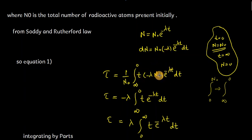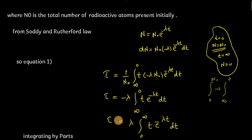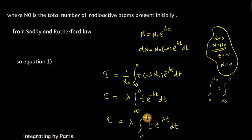After simplifying, and by changing the limit of this integration, we get a minus sign, and multiplying that minus with the existing minus sign, we obtain: tau equals λ times the integral from 0 to infinity of t·e^(−λt)·dt. Now we need to solve this integration by using integration by parts.